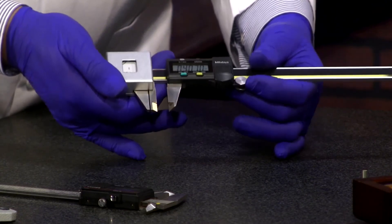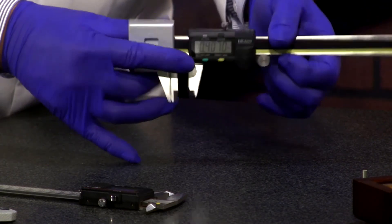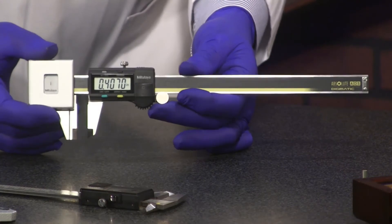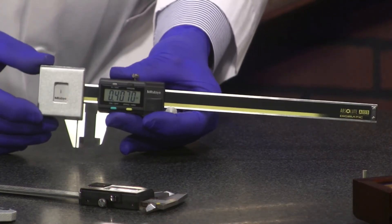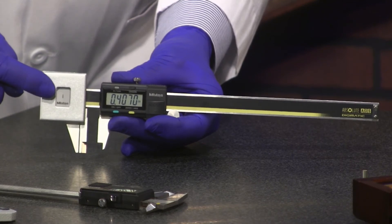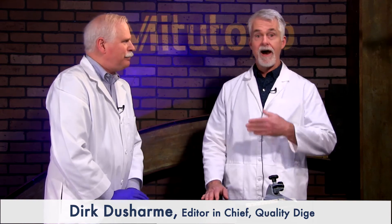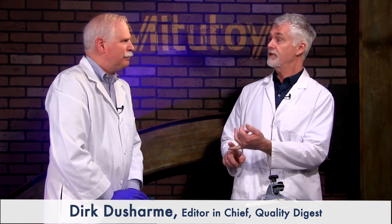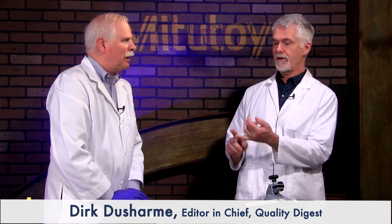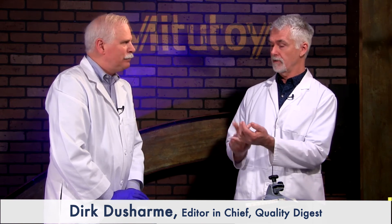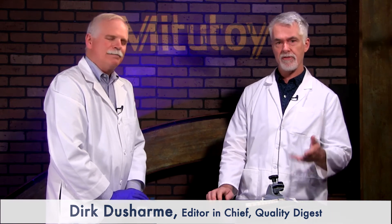So this is the constant force, low force caliper from Mitutoyo. Again, with an SPC output, has a number of different features. It has the absolute technology where you can zero it anywhere along the line, and it still will come back to zero when you go back to absolute. Great tool. Very versatile. Once again, Craig, thanks a lot. That was the low force micrometer, adjustable force micrometer, and the fixed low force caliper from Mitutoyo. Thanks to Mitutoyo for supplying those to us. Mitutoyo is our sponsor today. Thanks to all of you for joining us, and we will see you at the next How To.